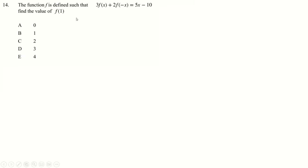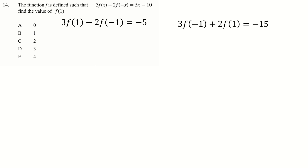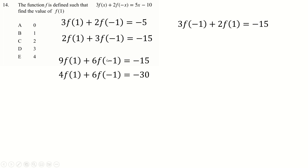Question 14: we're asked for f(1), so substitute x = 1, which gives minus 1 on the right-hand side. Then substitute x = minus 1 to get another equation involving f(1) and f(minus 1), creating a simultaneous equation. Multiply one equation by 3 and the other by 2, subtract to eliminate f(minus 1), then divide by 5 to get f(1) = 3.